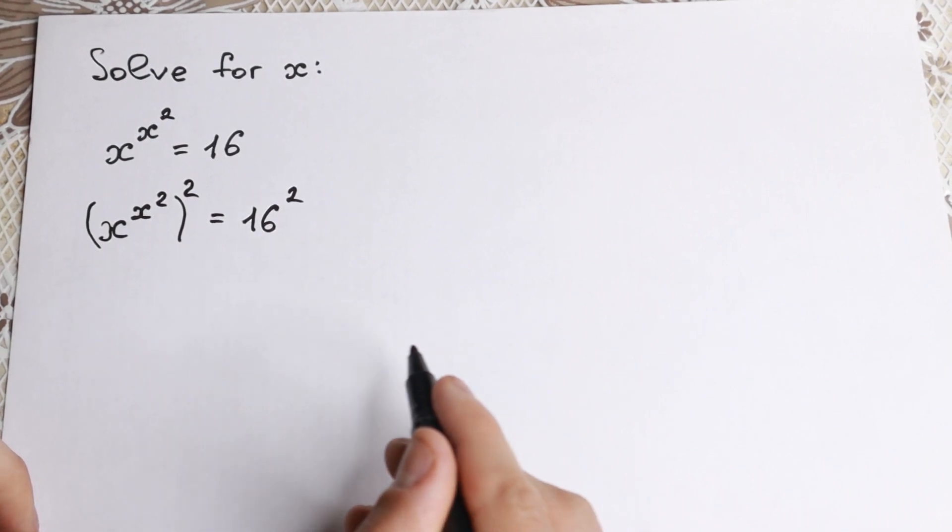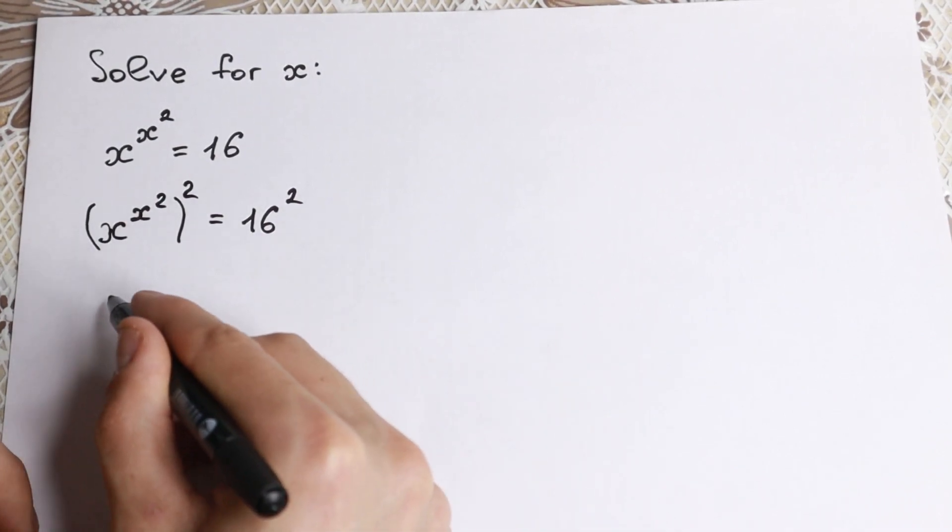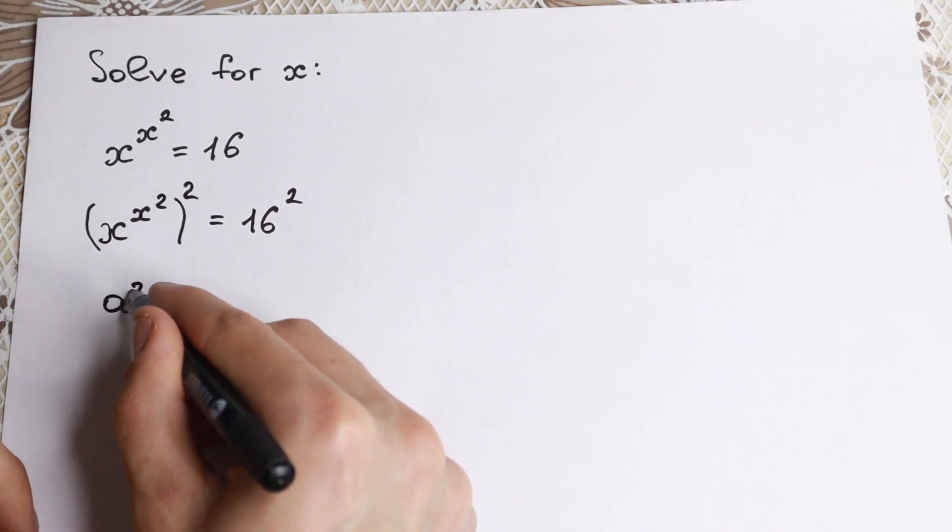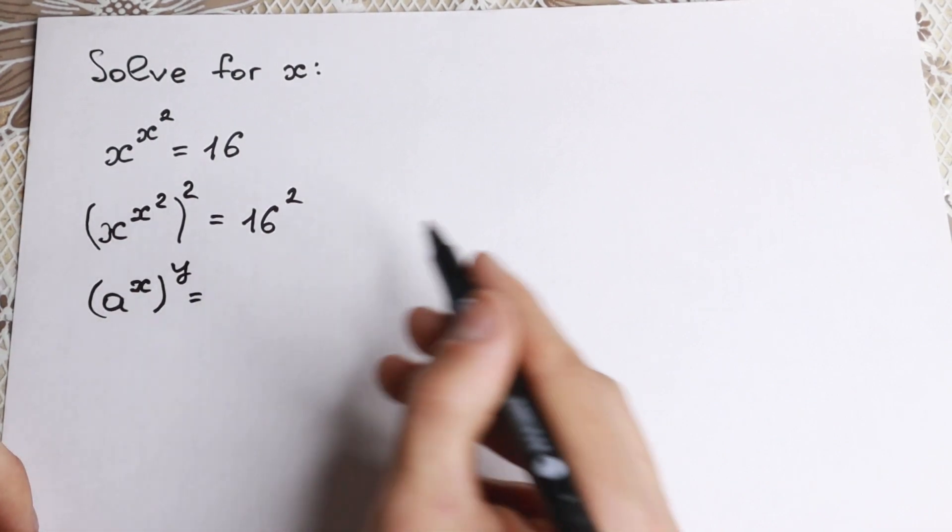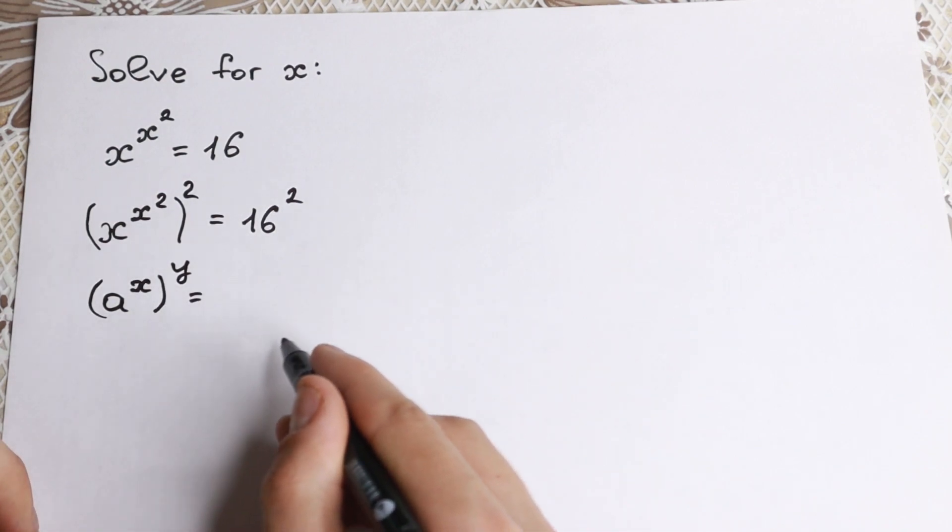And right now I want to show you a rule of interchange, it's a really good rule. Take a look, if we have for example a to the power x and we raise this to the power y, we all know in mathematics that right here we need to multiply these powers, so we can easily do this, we multiply it.